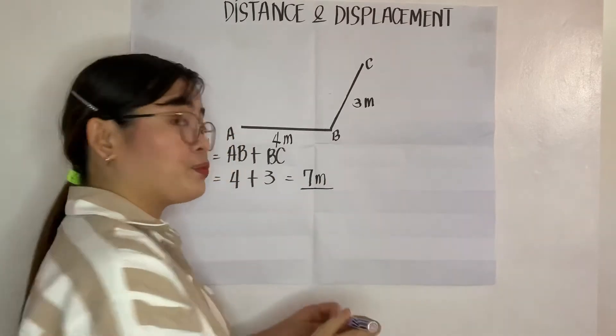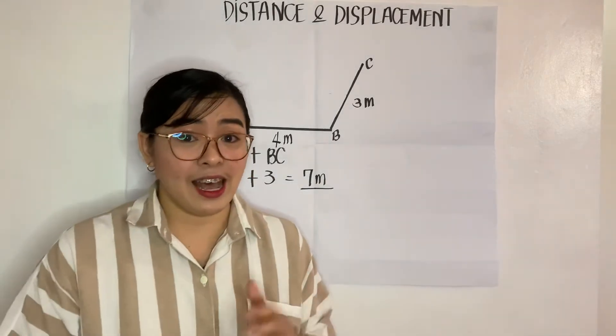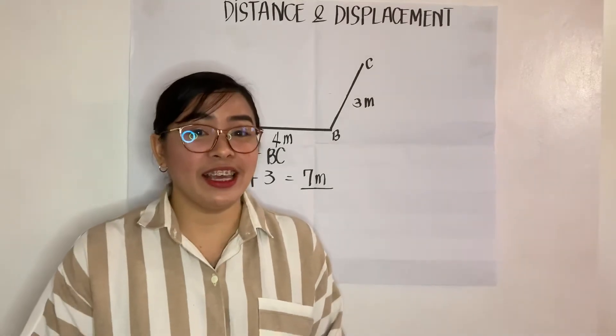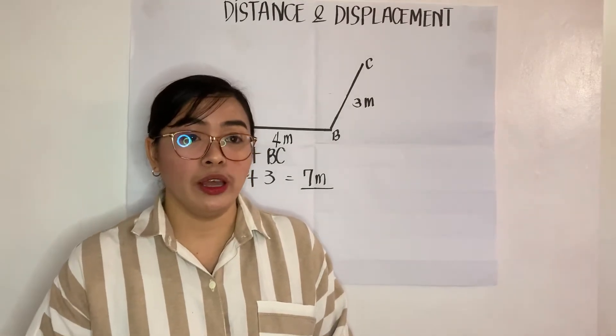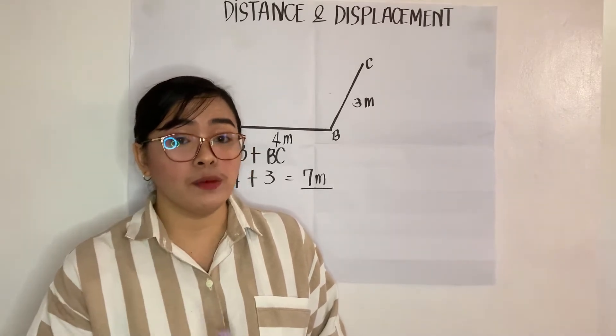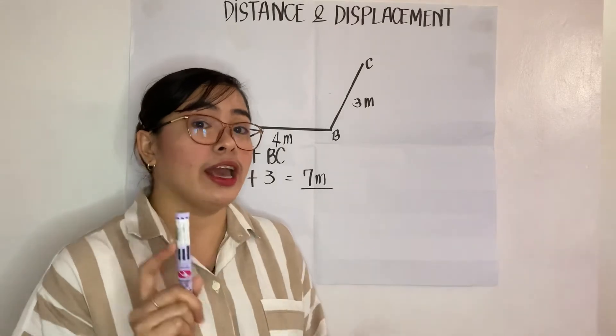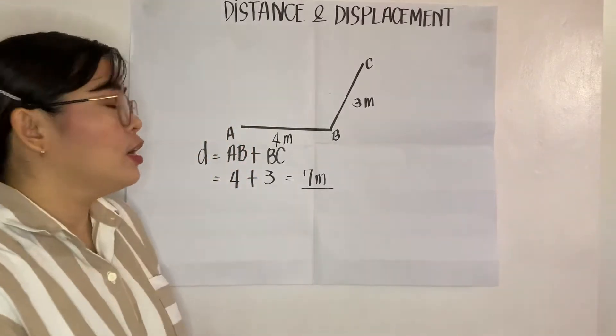our distance for this example is 7 meters. So, distance is a scalar quantity. Scalar quantity has only a magnitude. And few examples of scalar quantity are length, mass, density, and so on and so forth.